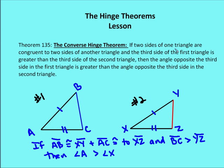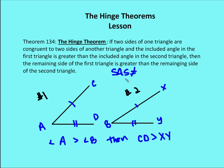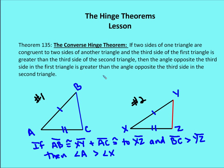That's the converse of the hinge theorem. In a proof or when explaining the hinge theorem, you can abbreviate it as SAS with an equal sign and a slash through it. For the converse of the hinge theorem, we write SSS with an equal sign and a slash through it. Those are the two hinge theorems — very straightforward — so let's take on one practice problem.